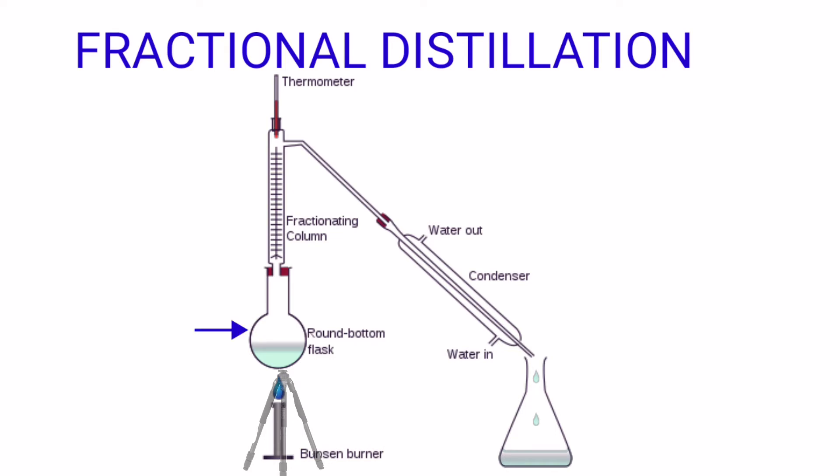Upon the stand there is a distillation flask which contains a mixture of low volatile and high volatile liquids. At the top of the distillation flask, a fractionating column is inserted.